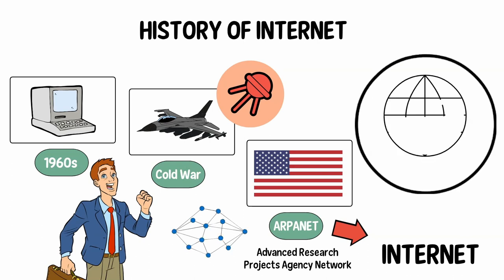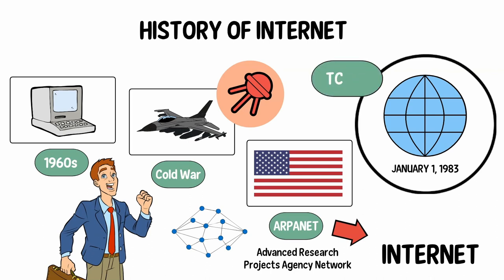January 1, 1983 is considered the official birthday of the internet. Prior to this, the various computer networks did not have a standard way to communicate. Then a new communications protocol was established called Transmission Control Protocol / Internet Protocol, TCP/IP.